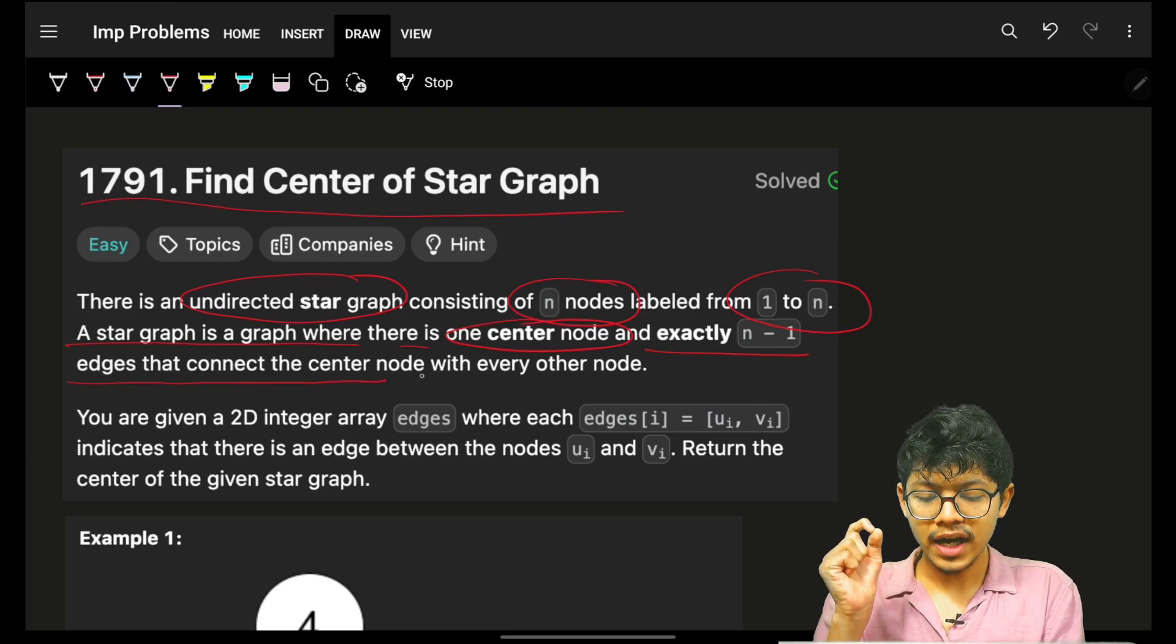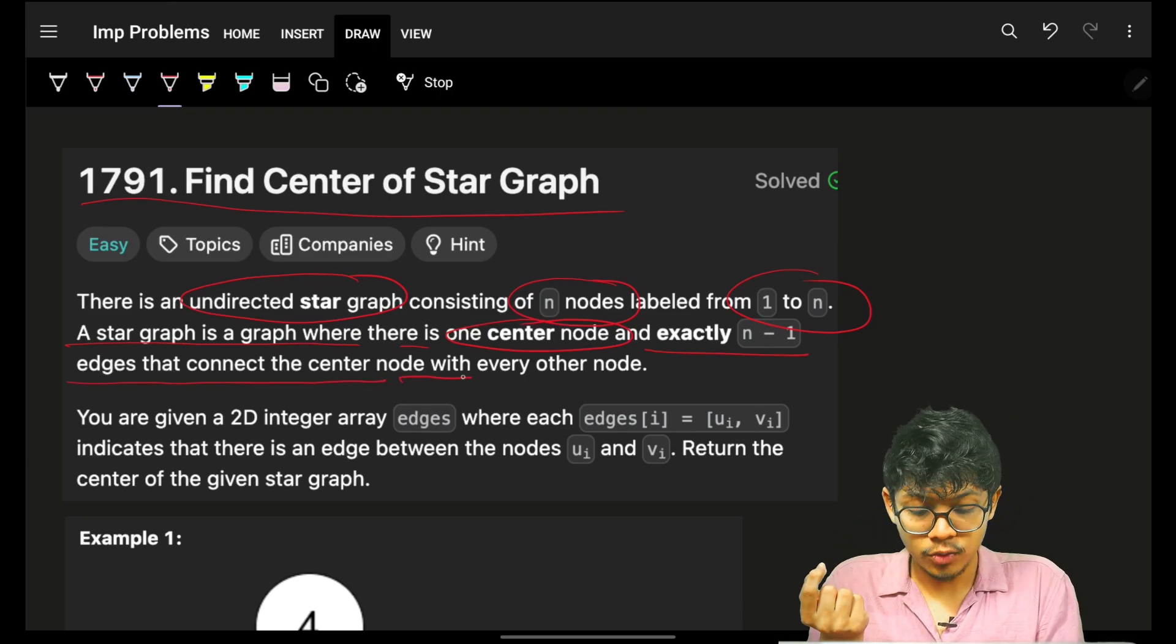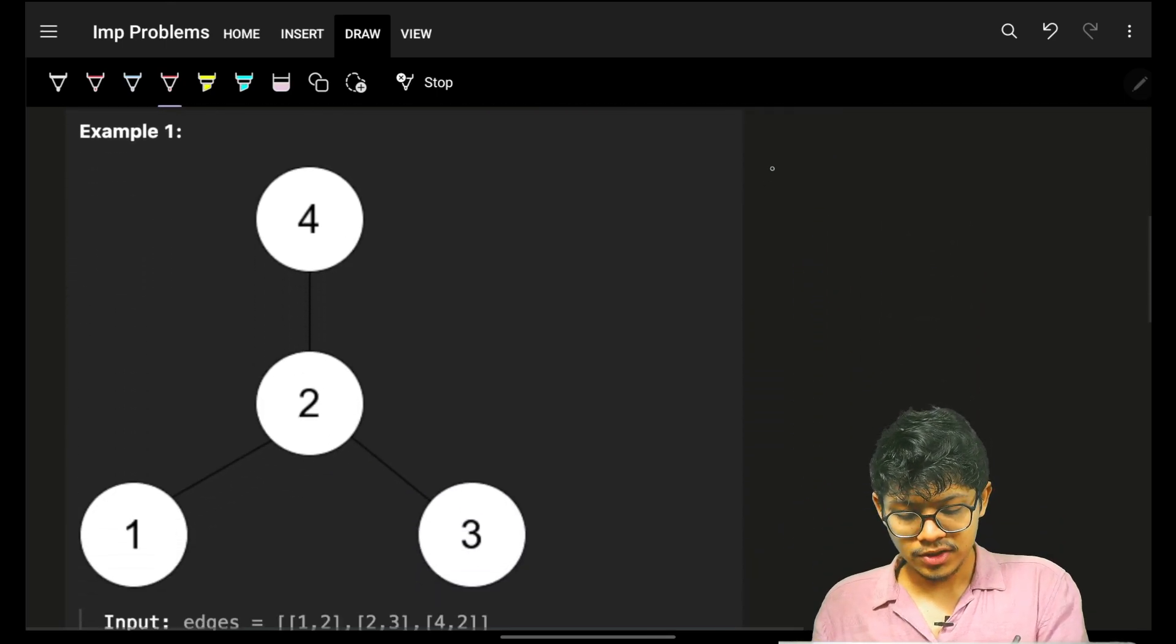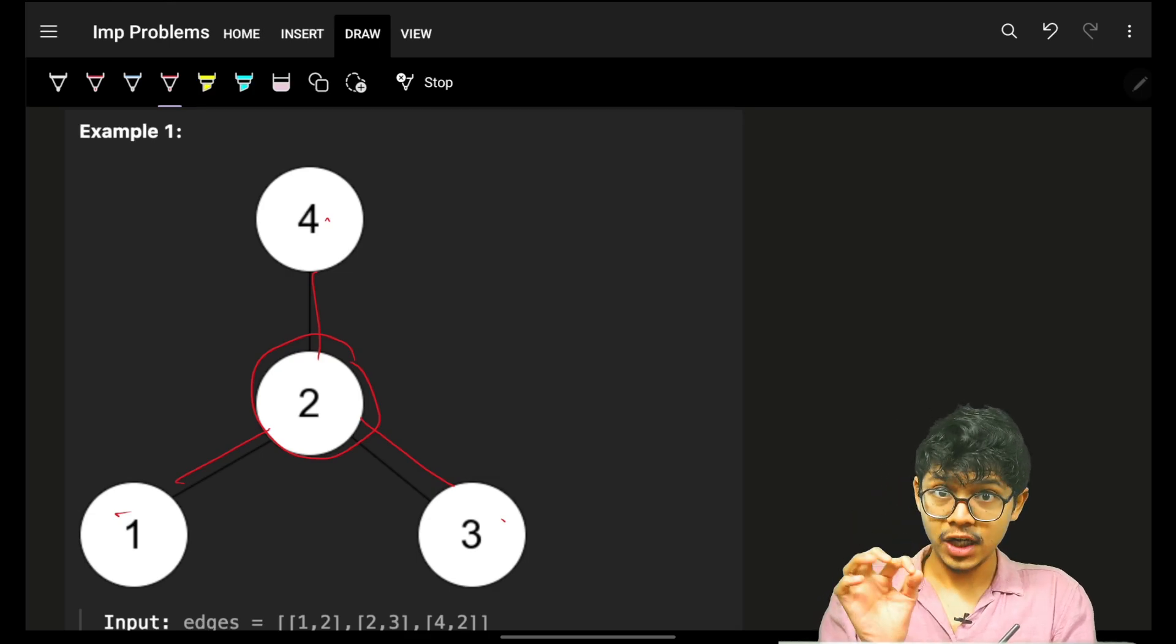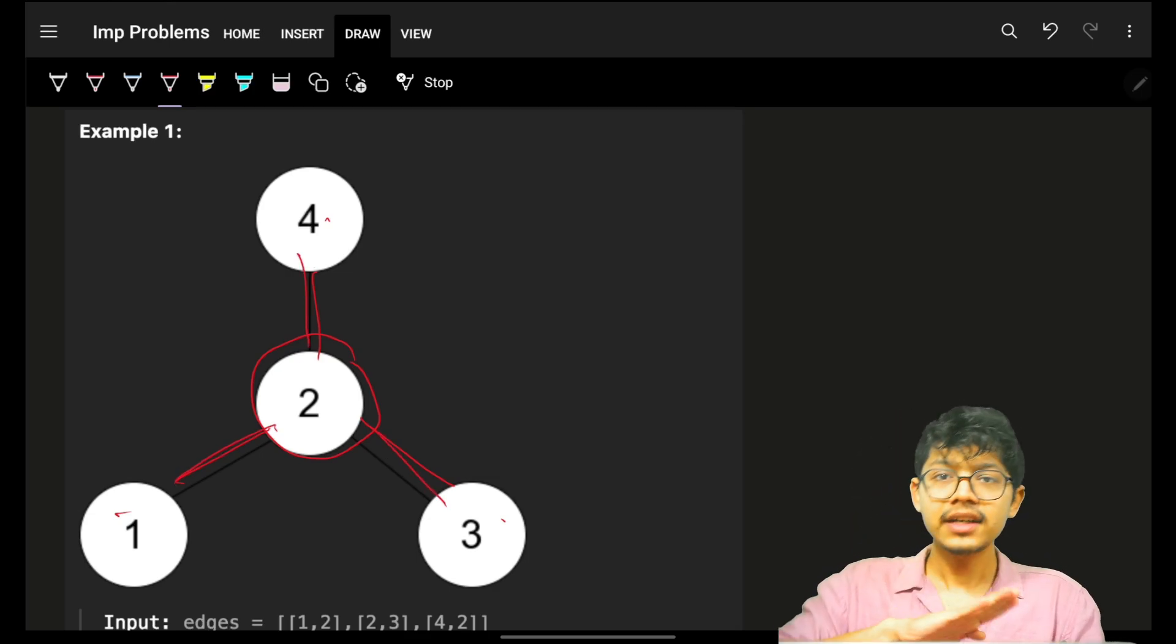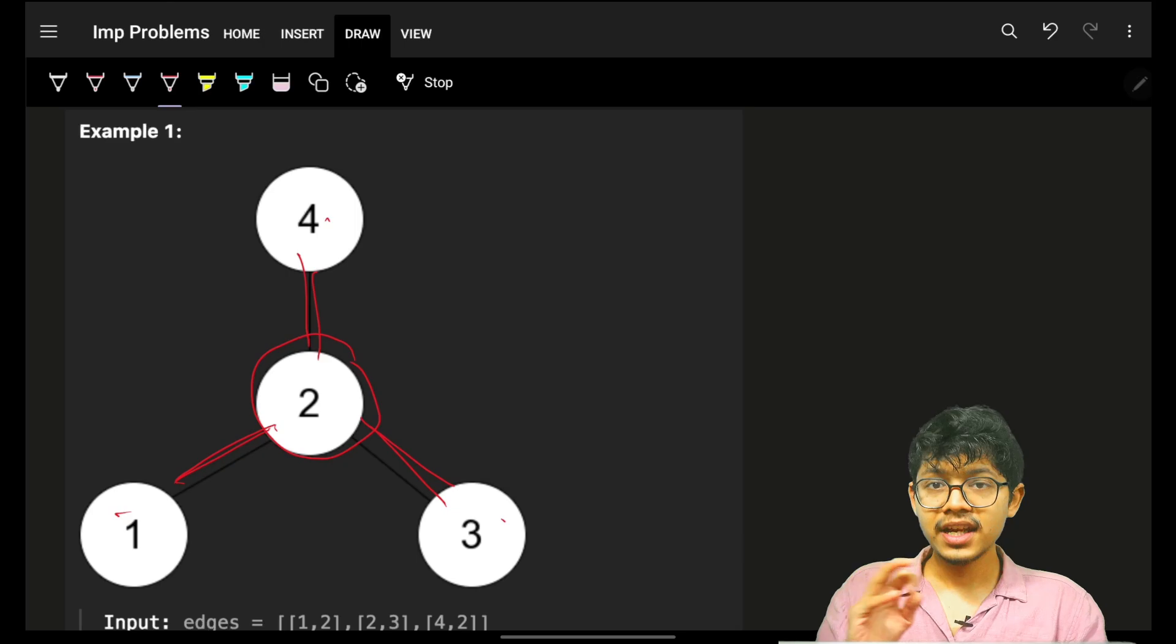As you can see, I have four nodes but three edges, so I will have one center node for sure, and then other three edges connecting the other three nodes.